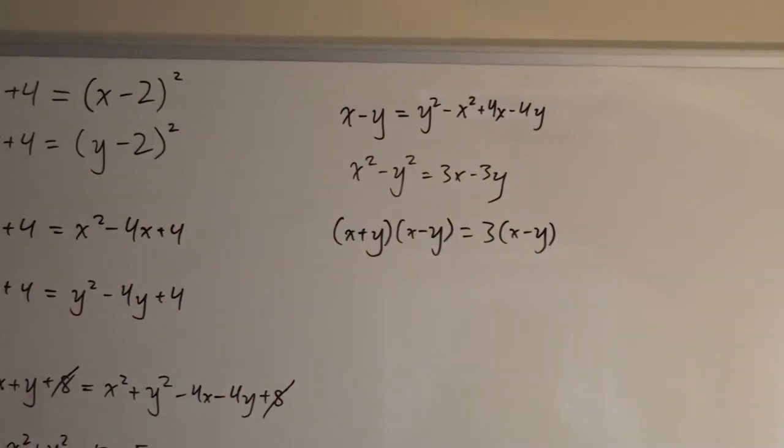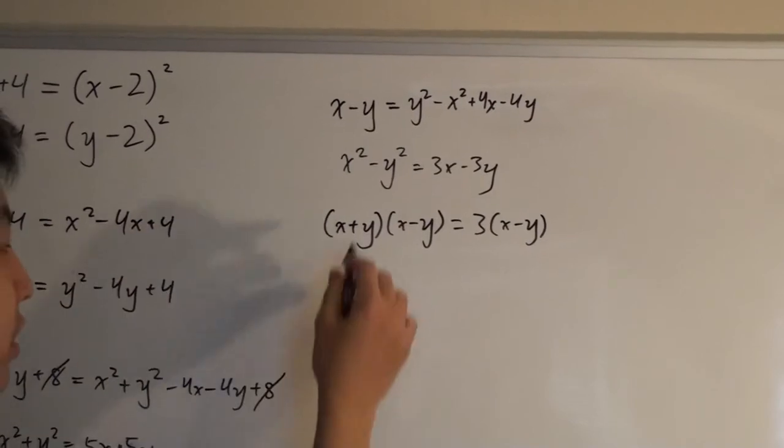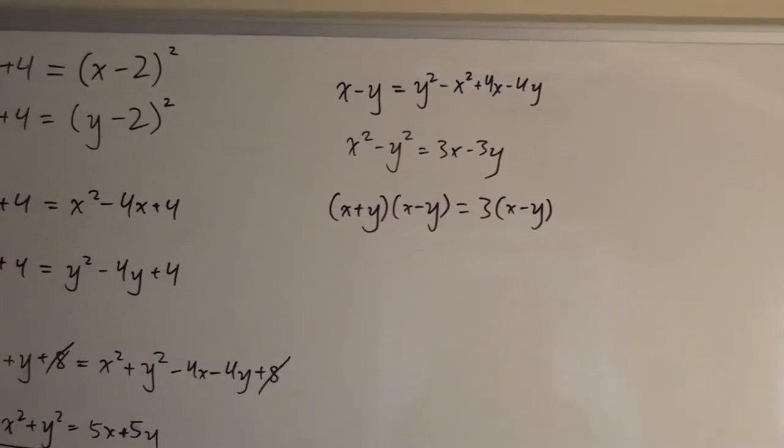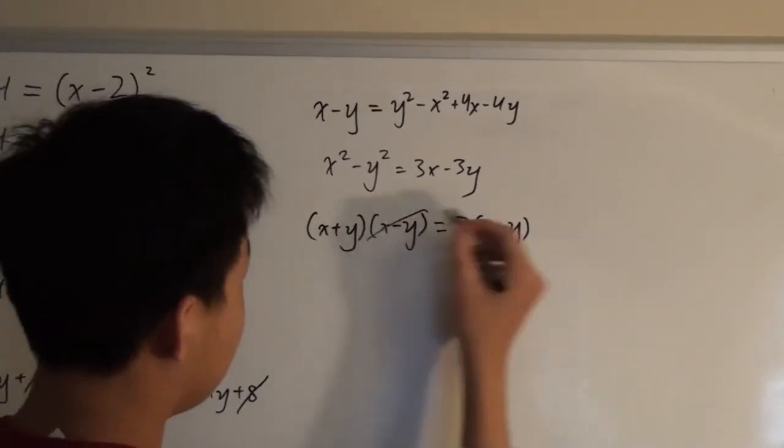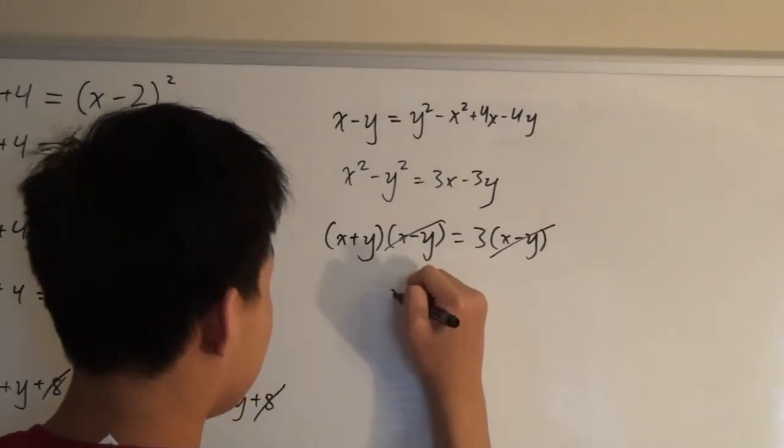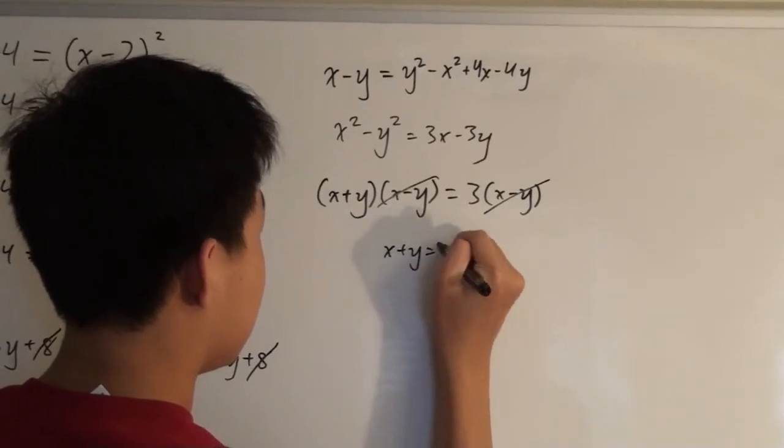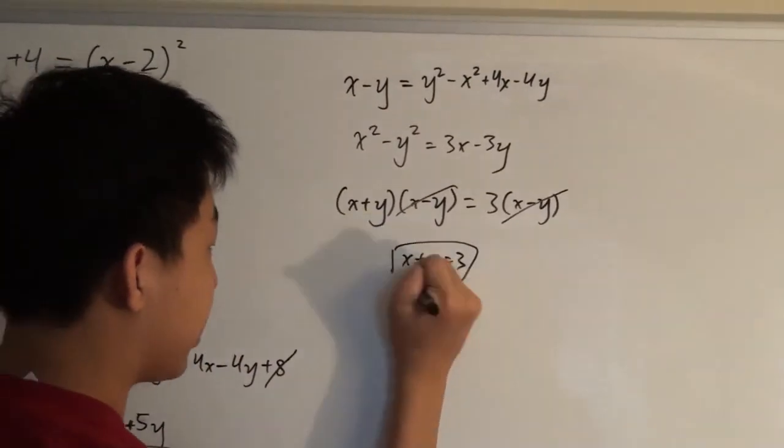Now we can cancel out the x minus y, because we know that x is not equal to y as stated in the problem, so we won't be dividing by 0. And that gives us that x plus y equals 3.